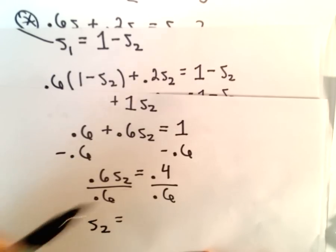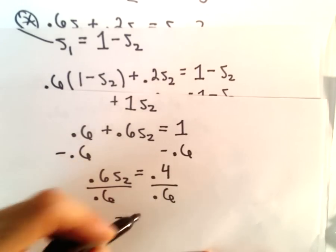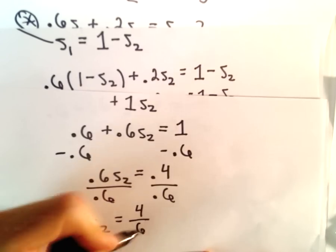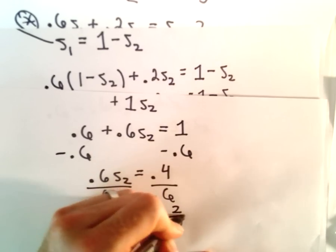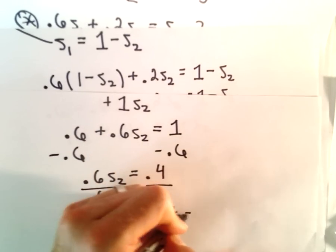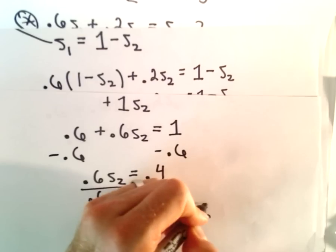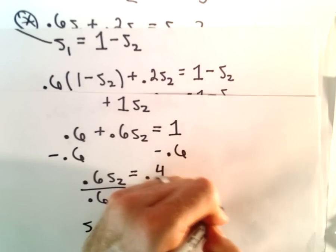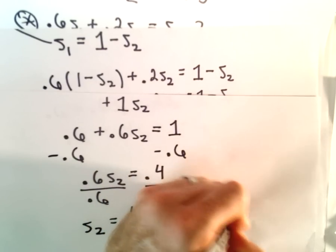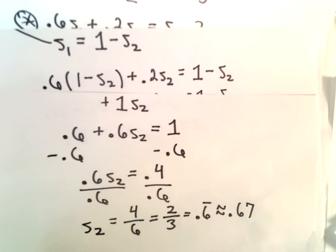Now we can divide both sides by 0.6, and we'll be left with S₂ equals 0.4 over 0.6, or 4 over 6, which is the same thing as 2/3, which is 0.6 repeating. We can round that to 0.67.